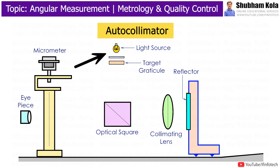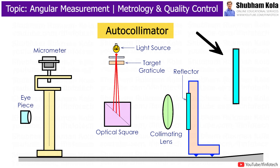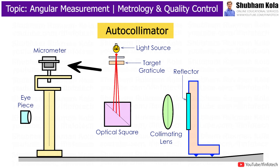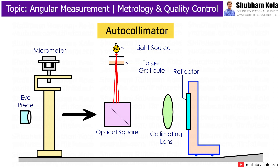It consists of a light source used to generate light rays. The reflector acts as the workpiece. A micrometer microscope is used to see the points of incident rays and reflected rays with target graticule and the distance between them. An optical square is used for changing the direction of light rays by 90 degrees.